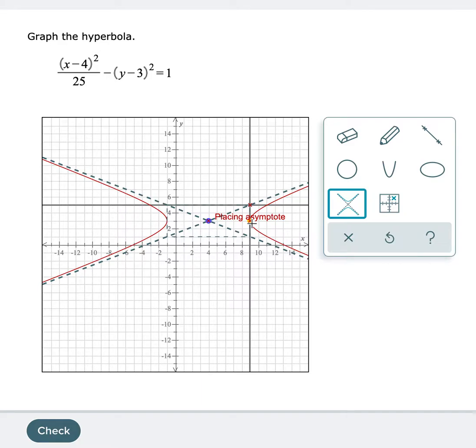That means that wherever my vertex is, I have to count the opposite direction I went, my a value, to get that. So since my b value is 1, and for my a I counted over, now I have to count either up or down.